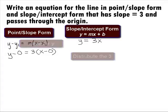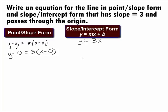Our final answer for the line that passes through the origin that has a slope of 3 in point-slope form is y minus 0 equal to 3 times x minus 0, and in slope-intercept form, it is y equal to 3x.